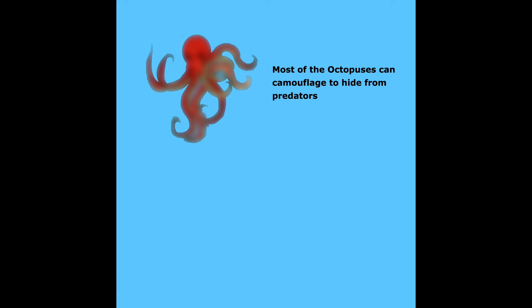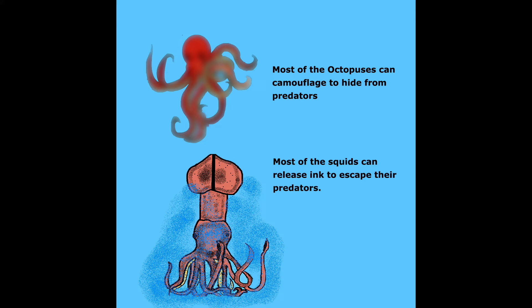Most octopuses can camouflage to hide from predators. Most squids can release ink to escape their predators.